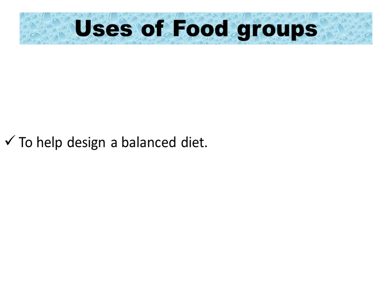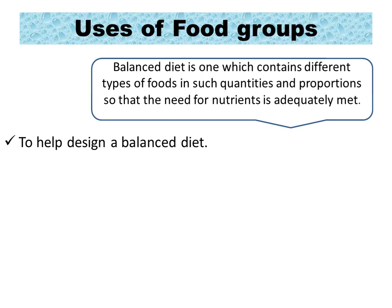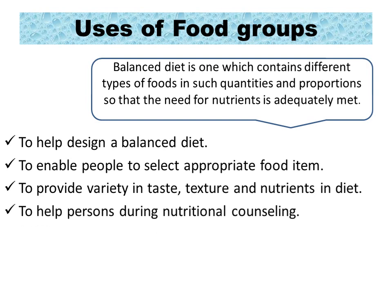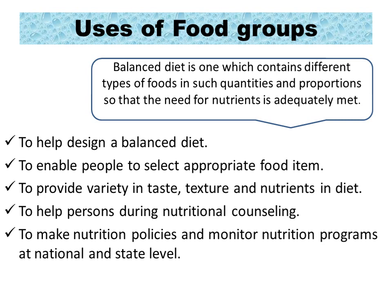Knowledge of food groups and the food pyramid enables a person to make their diet balanced and wholesome. The definition of a balanced diet says that different types of foods should be included in daily diet in such amounts that the RDA is met and good health is promoted. It enables people to select appropriate food items and include variety in their diet. It also helps nutrition experts during nutritional counseling and in making nutrition policies and monitoring nutrition programs.